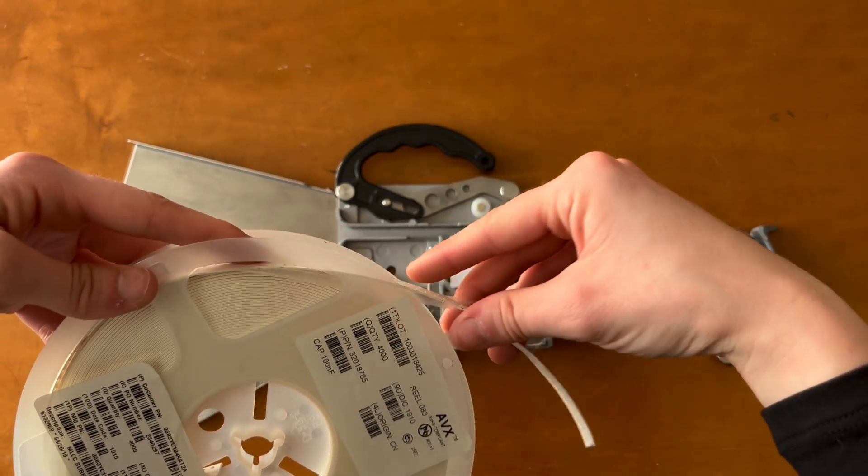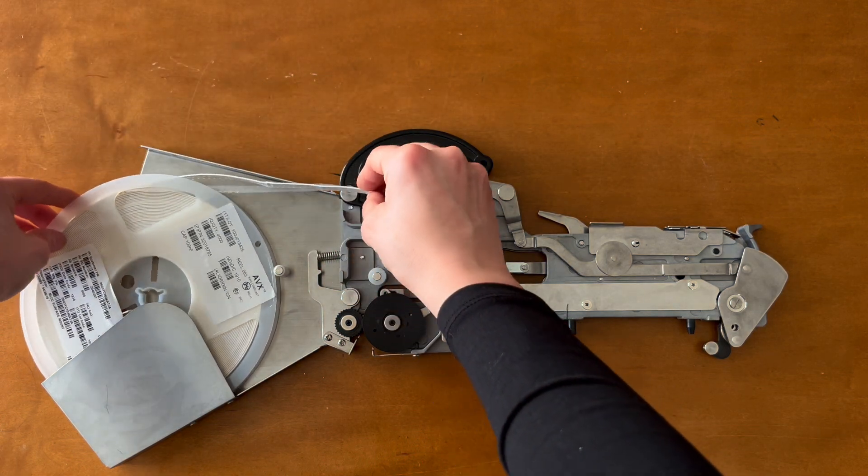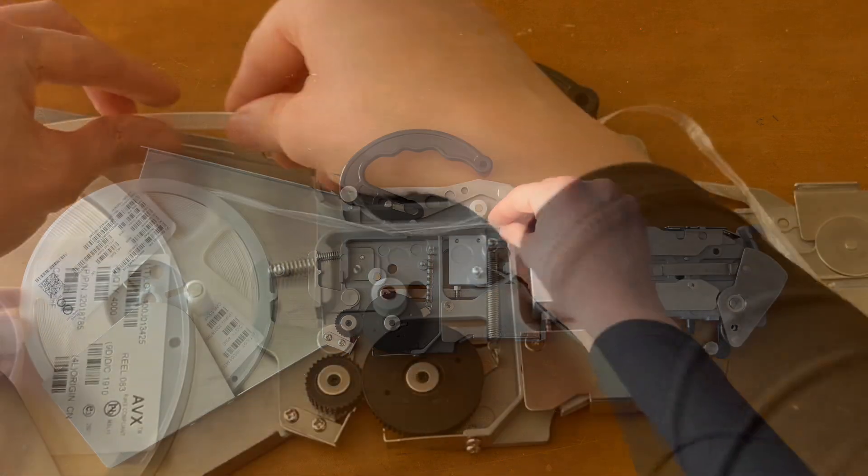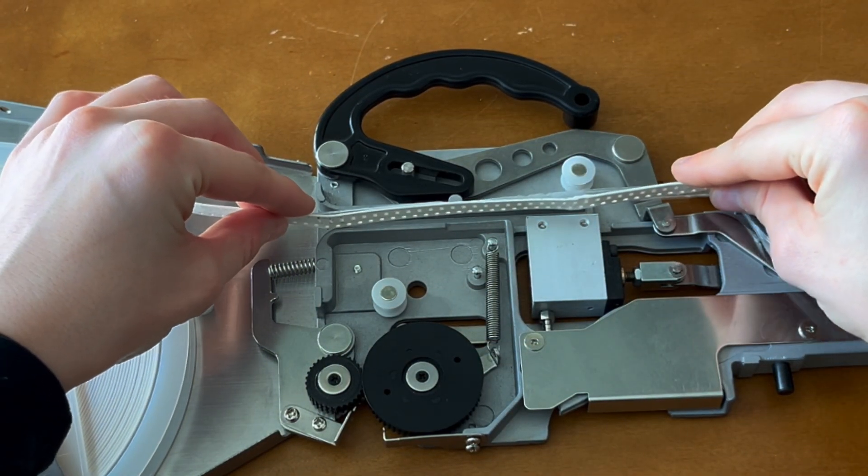The first thing we're going to do is slide the tape reel into the feeder until it rests against the stopper. Just make sure the tape's direction of feed is positioned to move clockwise. Then we're going to pull both the carrier tape and cover tape forward towards the front opening of the tape guide frame.